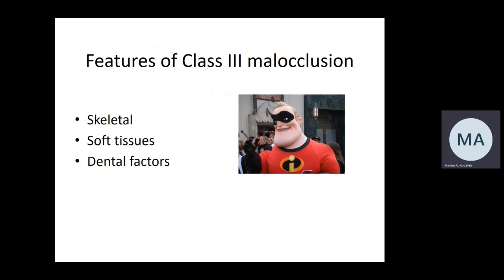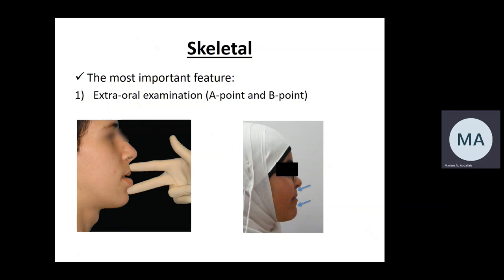Now we turn to the common features of patients with class three malocclusion — from skeletal, soft tissue, and dental perspectives. Skeletally, on extra-oral examination, we look at the soft tissue A point and soft tissue B point. Normally A point should be ahead of B point by up to three millimeters — class one. If it's less than that, this is class three. Patients with class three malocclusion usually have a straight profile or concave profile; the more severe the malocclusion, the more concavity the facial appearance will have.